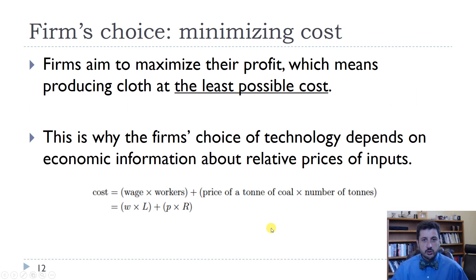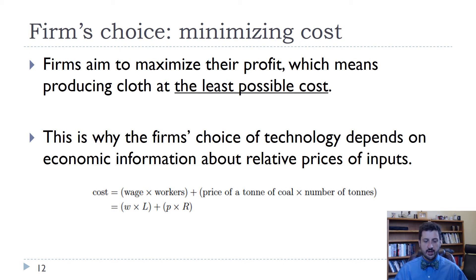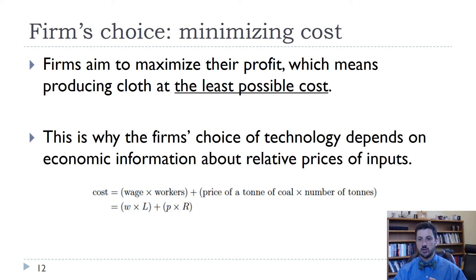Thinking about a firm's choice: they want to maximize their profit, and profit is revenue minus cost. For 100 meters of cloth, maximizing profit is the same as minimizing cost — they want to produce at the least possible cost. Their costs depend on how many workers they use and the wage, and how much coal they use and the price of coal. That's just: wage times workers plus price per ton of coal times the number of tons of coal — W times L plus P times R.